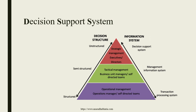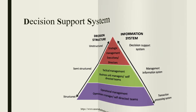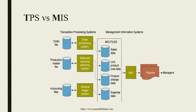This is another structure of the Decision Support System. You have TPS at the bottom, then MIS and the DSS. This represents unstructured, semi-structured, and structured data. The decision support system at the top is the information system where the decision structure comes into picture. A simple example of the Transaction Processing System with respect to MIS includes: an order file, a production master file, an accounting file, an order processing system, a material resource planning system, and a general ledger system. These processing systems all give input to the MIS files — sales data, product cost data, product exchange data, and expense data — which combine in the MIS to generate reports for managers.